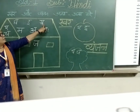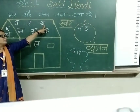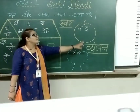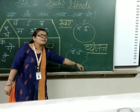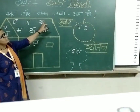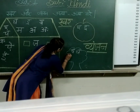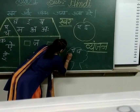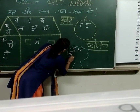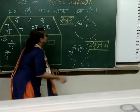Then ख से खरगोश — ख से खरगोश क्या होता है? Swar or Vyanjan? ख से खरगोश Vyanjan hota hai. So we have to write it in vriksh mein. ख से खरगोश.